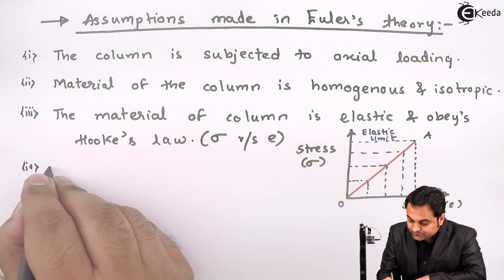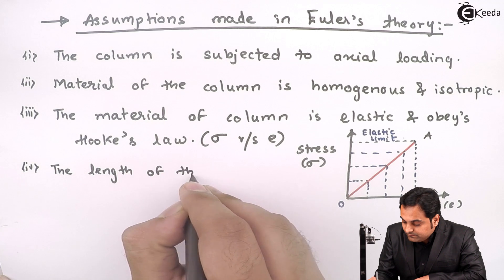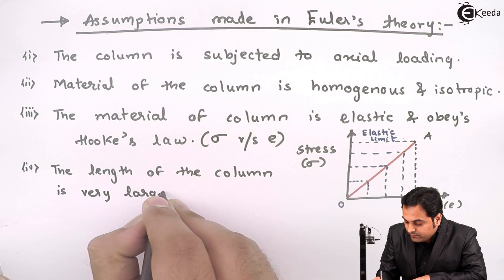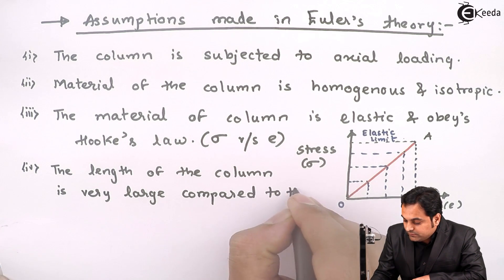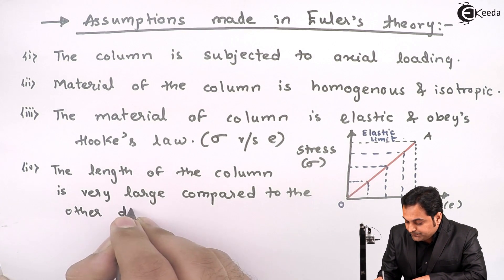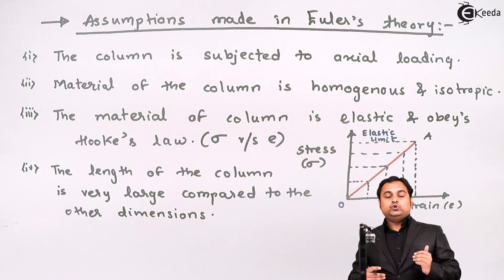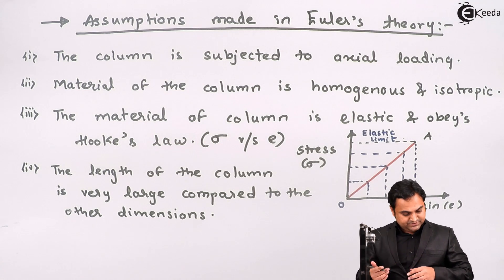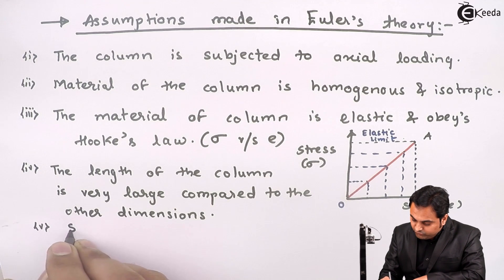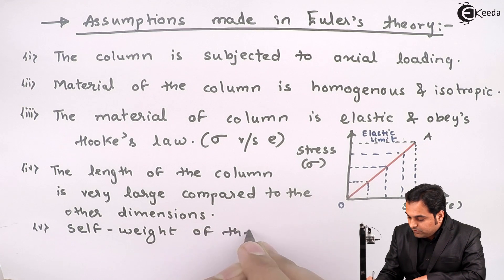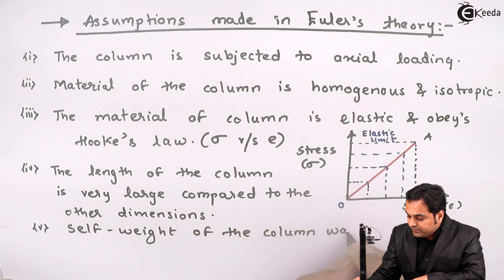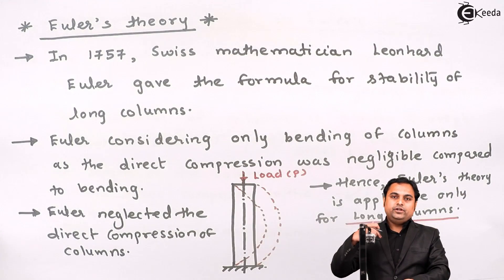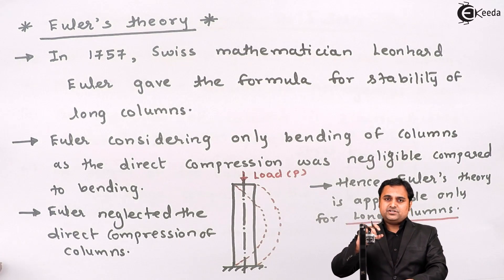The next assumption: the length of the column is very large compared to the other dimensions, which are called lateral dimensions — he was analyzing only long columns. Then, the self-weight of the column is neglected; that is, the own weight of the column is not considered, and we are considering only the external loading. In actual cases, even because of self-weight there is some amount of compression in the column.